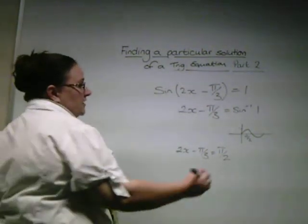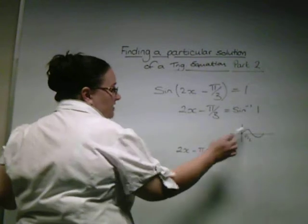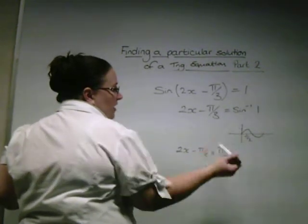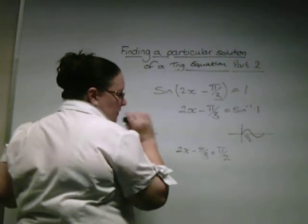We know that just from using our graphs. We didn't have to get our calculators out. We could find the sine of 1 and that's going to be pi by 2.